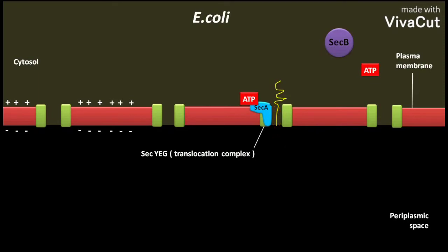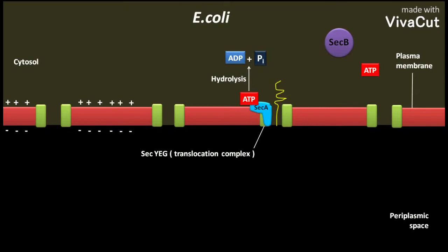SECA catalyzes the hydrolysis of ATP to produce ADP and Pi. The energy released during ATP hydrolysis causes a conformational change in SECA. Due to this conformational change, SECA withdraws itself from the plasma membrane.